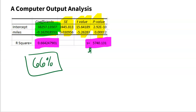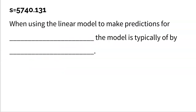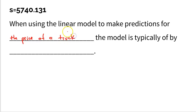So let's talk about how we write this up — again, it's a script. When using the linear model to make predictions for [fill in blank], the model will typically be off by [fill in blank]. For our specific problem: when using the linear regression model to make predictions for the price of a Ford F-150, the model is typically off by $5,740. That's almost $6,000 — when predicting the price of a truck, you'd hope to be a little bit closer than that.